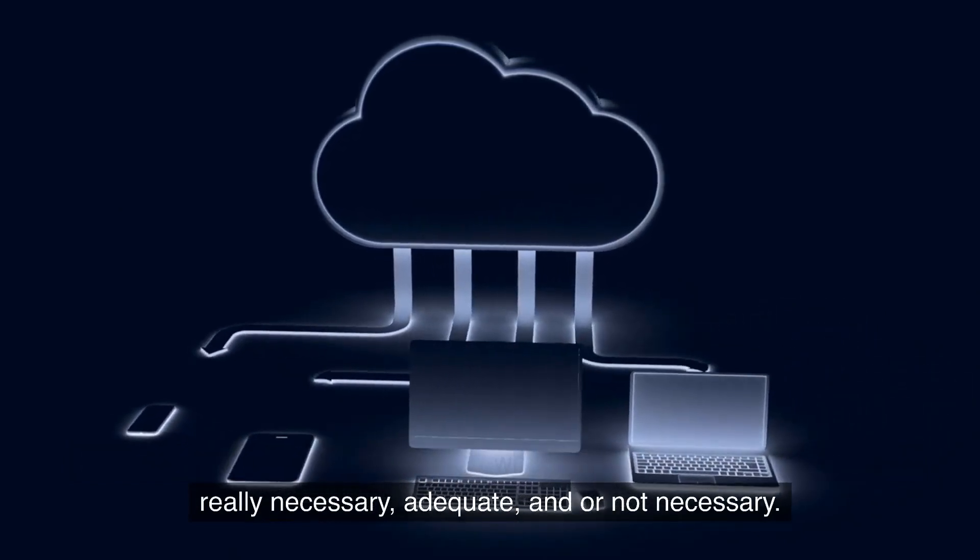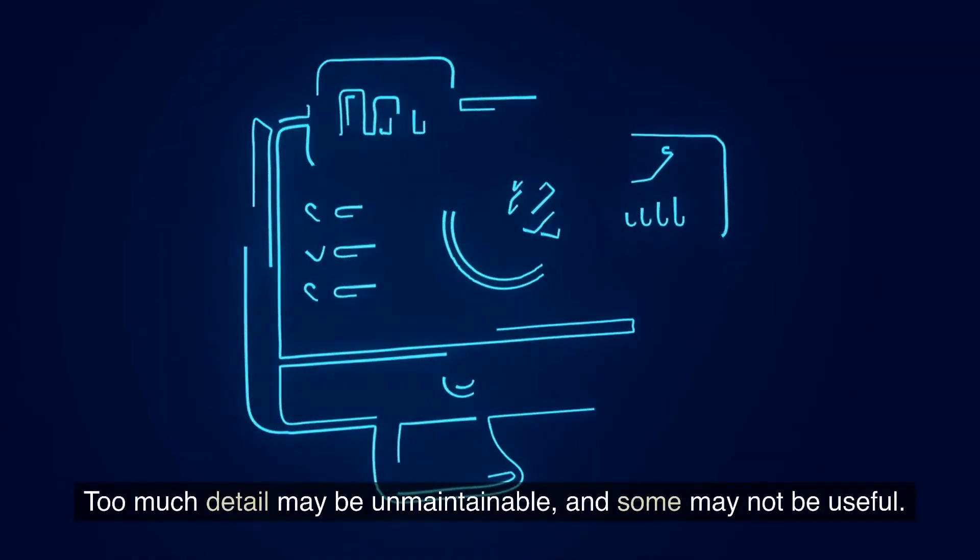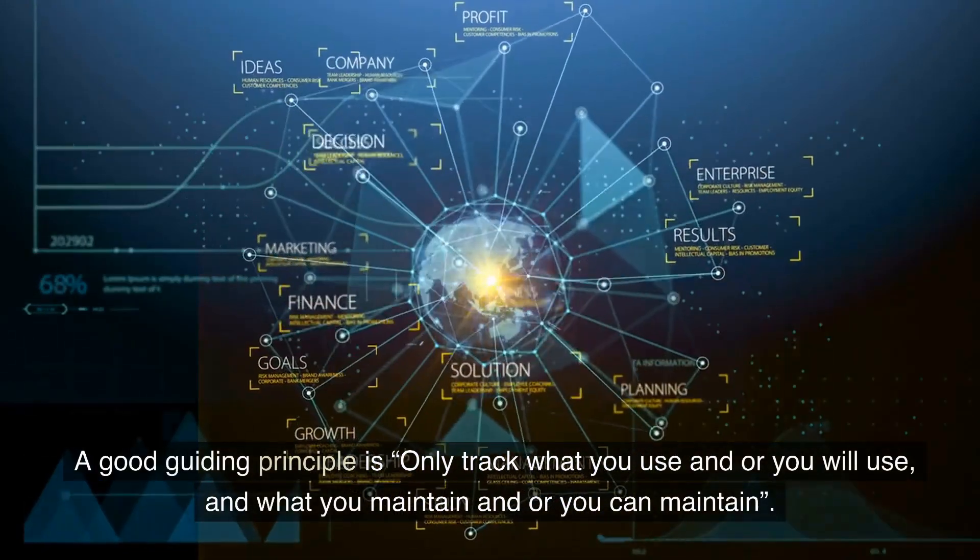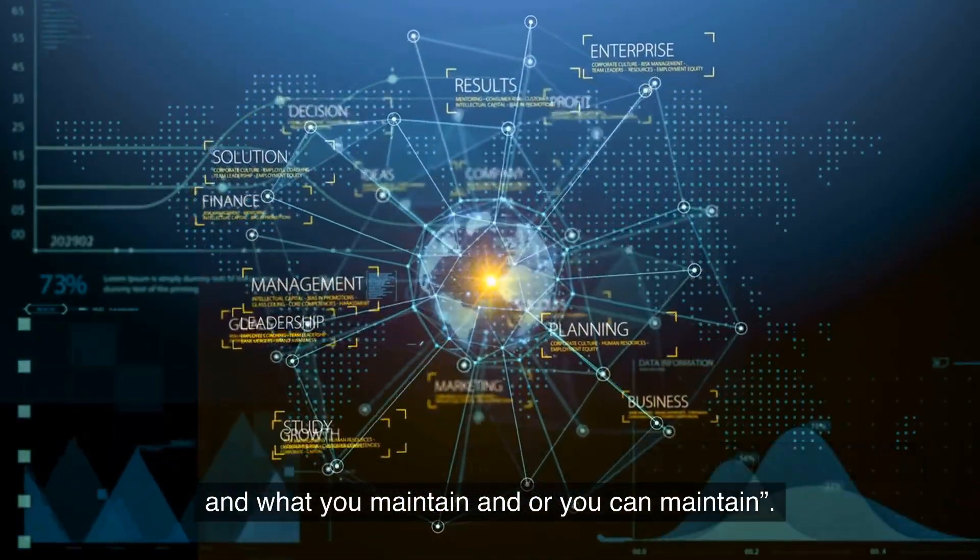It makes sense to find a balance in what information should be tracked, really necessary, adequate, and or not necessary. Too much detail may be unmaintainable, and some may not be useful. A good guiding principle is, only track what you use and or you will use, and what you maintain and or you can maintain.